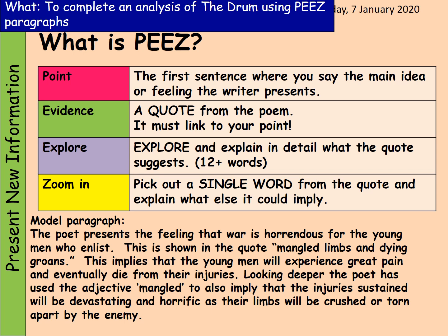Your Point is the first sentence where you state the main idea or feeling the writer presents — because that's normally what the question will be about, how does the writer present a feeling. You will then use Evidence to support what you're saying: your quote must link to your point. Then Explore — explain in detail what the quote suggests, usually 12 or more words. And then the Zoom In, which we put as a challenge: pick out a single word from your quote and explain what else it could imply.